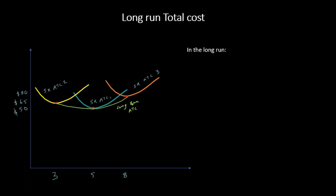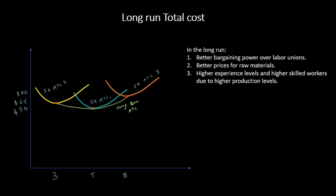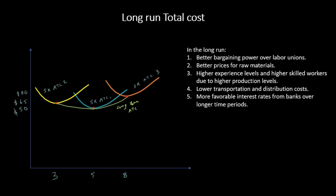There are several reasons why we can operate at lower costs in the long run. First, we have better bargaining power over labor unions, so we can get labor at less cost. We can also get better prices for raw materials and enjoy the benefits of higher experience levels and more skilled workers due to higher production levels. Additionally, we can have lower transportation and distribution costs, better interest rates from banks due to longer time periods, and lower fixed costs from leasing over longer periods.